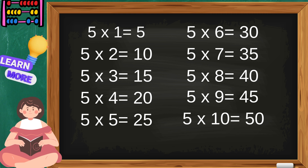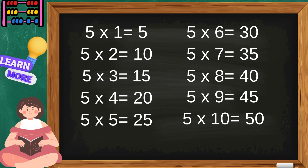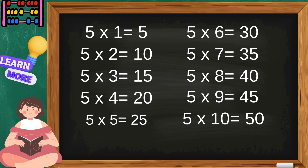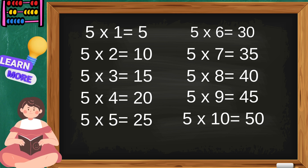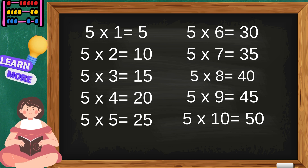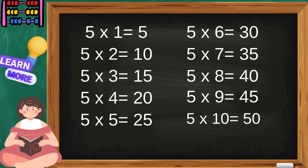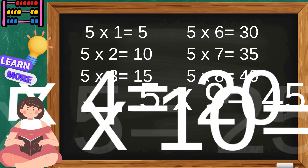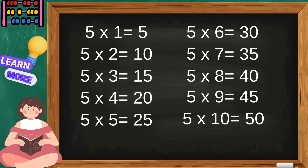Five ones are five, five twos are ten, five threes are fifteen, five fours are twenty, five fives are twenty-five, five sixes are thirty, five sevens are thirty-five, five eights are forty, five nines are forty-five, five tens are fifty. That was the table of five.